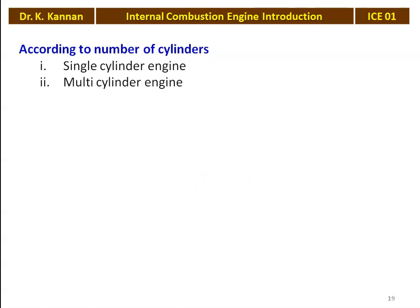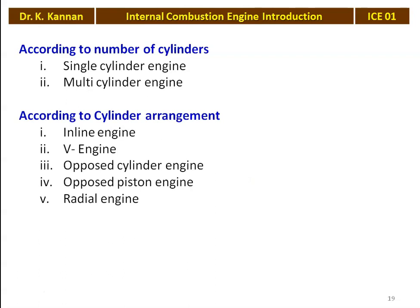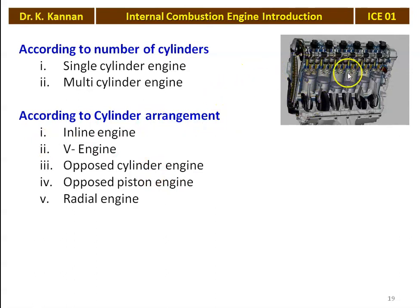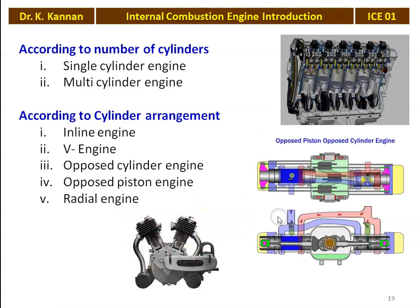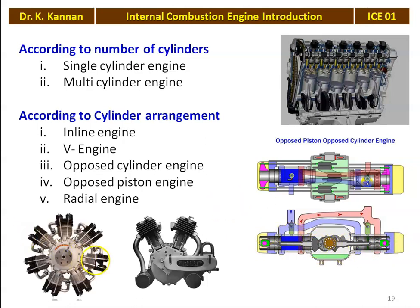According to the number of cylinders: single cylinder engine or multi-cylinder engine. According to the cylinder arrangement: inline engine, V engine, opposed piston engine, opposed cylinder engine, or radial engine. Inline and V engines are used in ground vehicles. Radial engines were earlier used for helicopters and aeroplanes. In the inline engine, cylinders are arranged in a line — for example, a six cylinder inline engine. In the V engine, cylinders are arranged in a V formation. In the opposed piston engine, there are two pistons per cylinder with the spark plug at the center. The radial engine is used in helicopters.